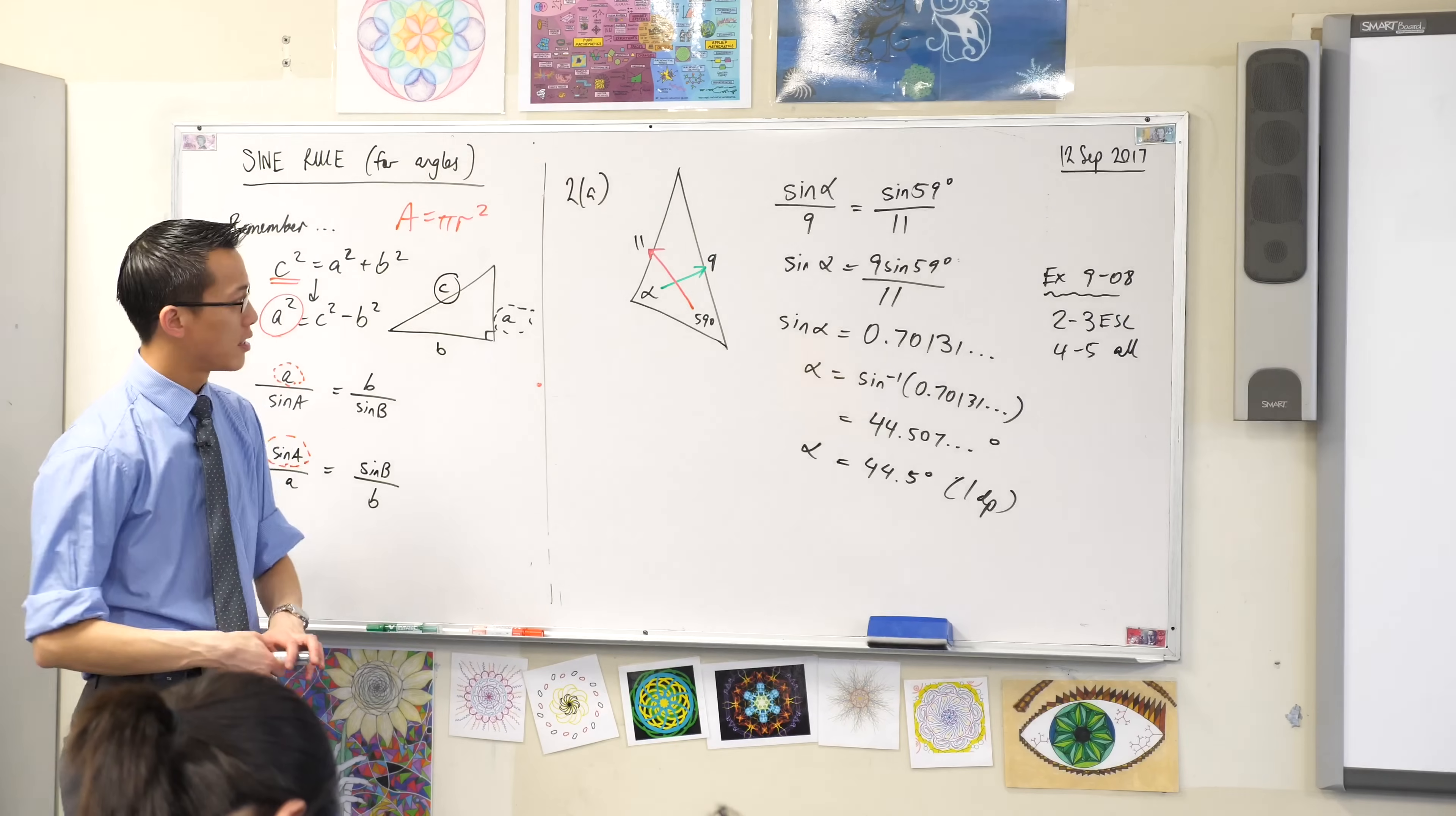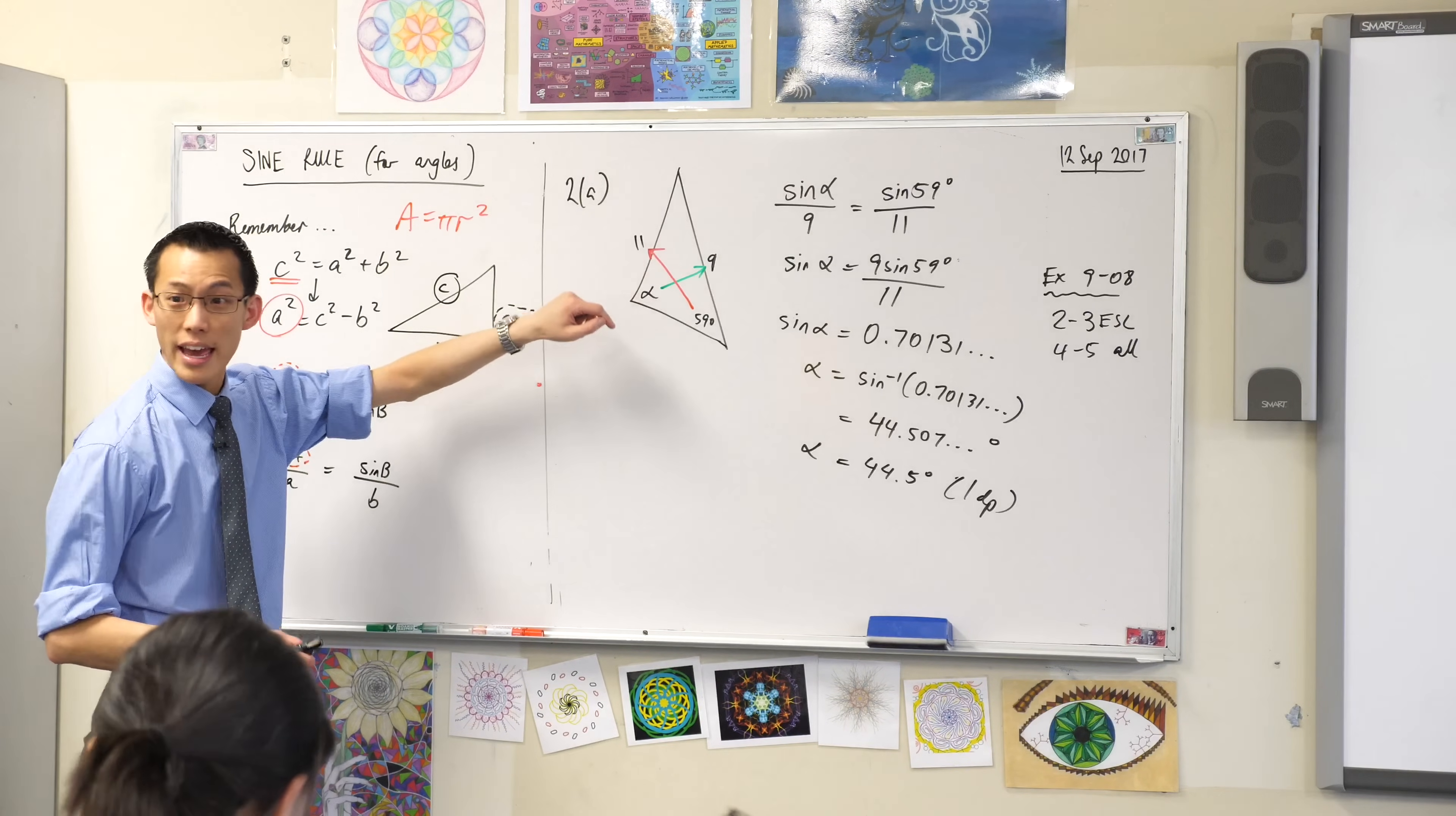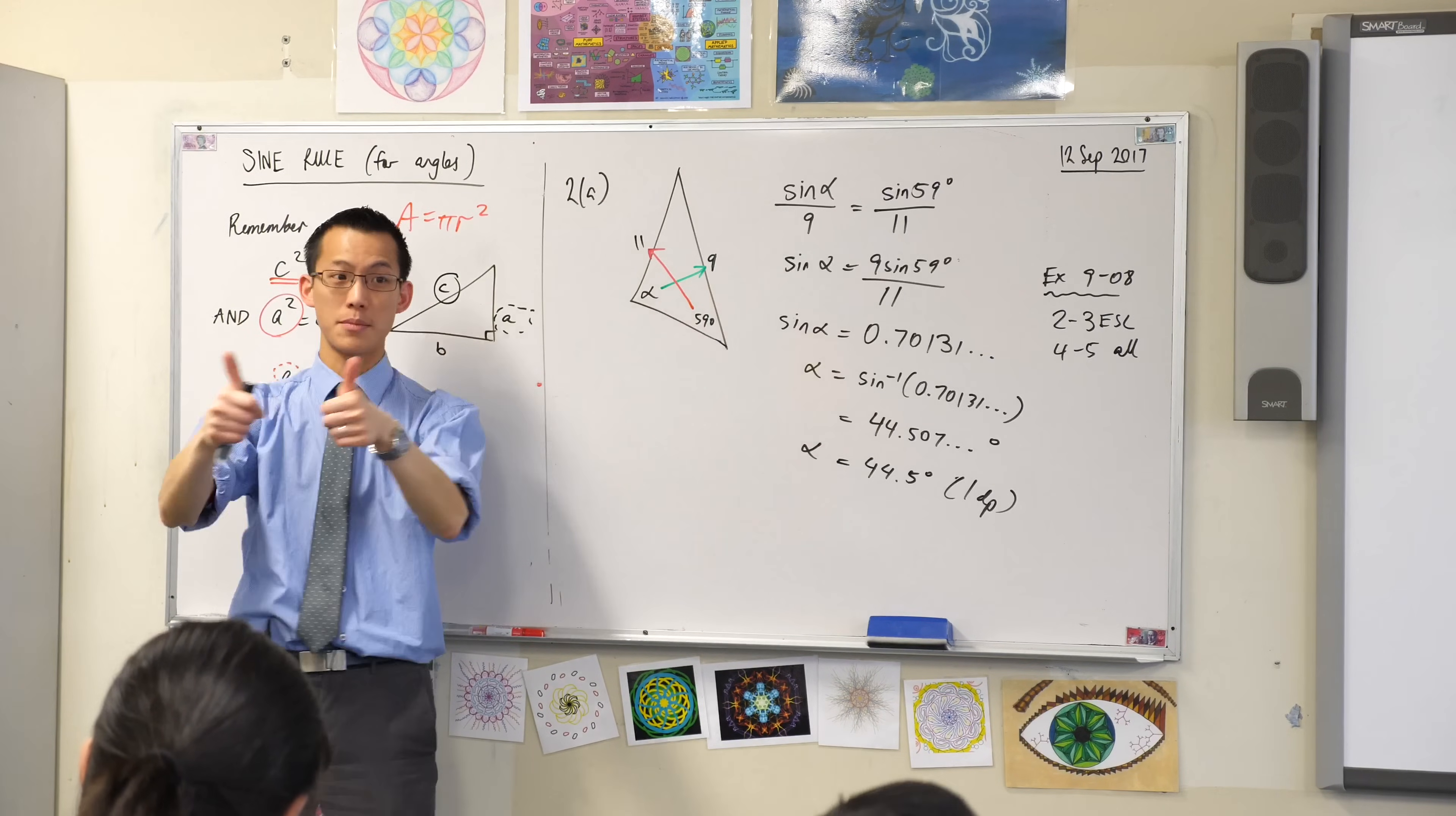Quick sense check, 44.5 degrees, does that look about right? Yeah, look, a smaller angle opposite a smaller side. Thumbs up, okay.